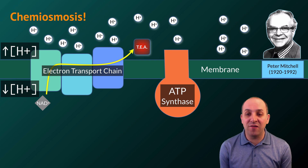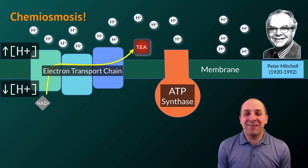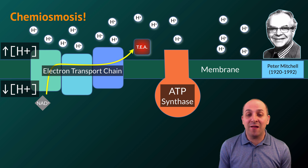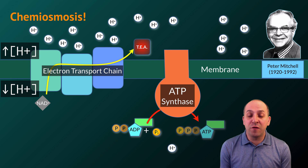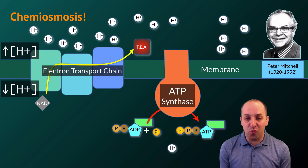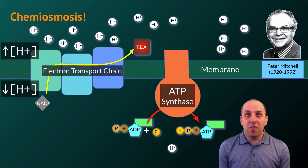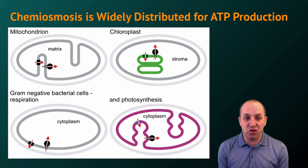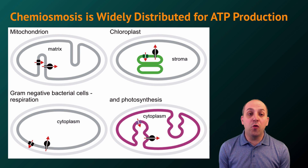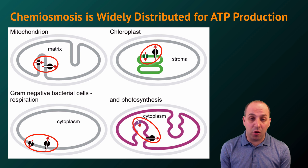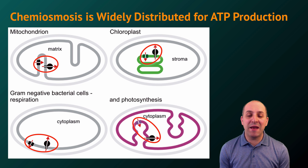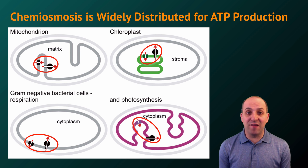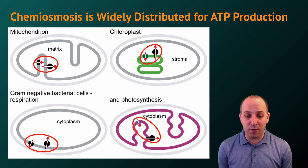As discussed, protons cannot move through the phospholipid bilayer. The only way protons can cross the membrane is through the ATP synthase protein. ATP synthase allows protons to move through the membrane and uses the free energy from that movement to drive the production of ATP. This process of chemiosmosis is a widely distributed means of ATP production seen in all eukaryotic cells — in the mitochondria and chloroplasts of those cells — and in many prokaryotic cells as well, which makes sense given the endosymbiotic origin of mitochondria and chloroplasts.